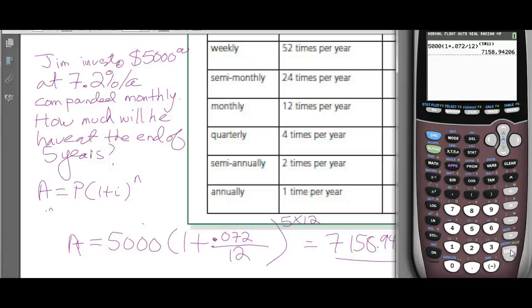Know the terms: annually, quarterly, monthly — and the number of days, weeks, months, and quarters in a year. Take your interest rate, divide by the number of times per year it's compounded, and multiply the number of years by that same number to get the number of compounding periods. A little bit of practice goes a long way. Questions like this appear in section 6.5 on the quiz.